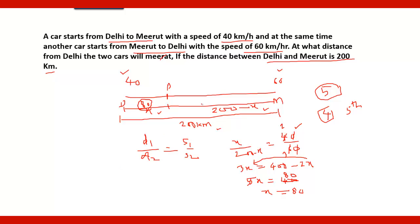If you are asked to find the distance from Meerut, you simply do 200 minus 80 and you will get the answer.